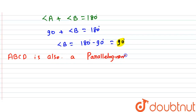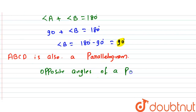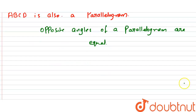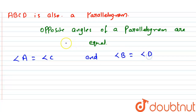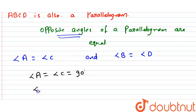Now ABCD is also a parallelogram. We know that opposite angles of a parallelogram are equal. So angle A equals angle C, and angle B equals angle D. Since angle A is 90 degrees, angle C is also 90 degrees. And since angle B is 90 degrees, angle D is also 90 degrees.